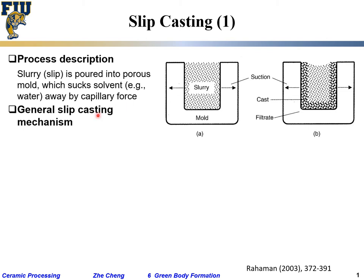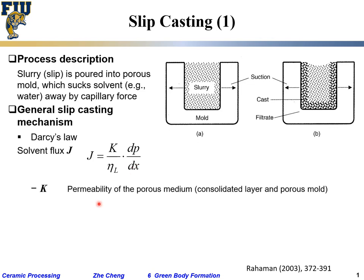The general slip casting mechanism follows Darcy's law. We define the solvent flux j as k divided by eta, times dp/dx. Here k is the permeability of the porous medium — your mold, as well as the already deposited or consolidated layer. That partially sedimented portion still allows solvent to pass through. Eta is the solvent viscosity.